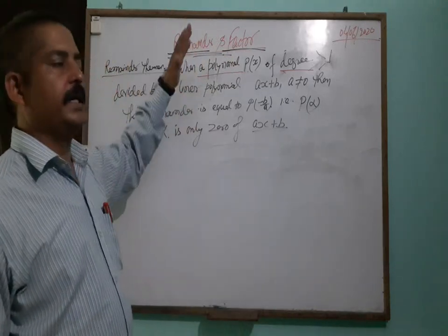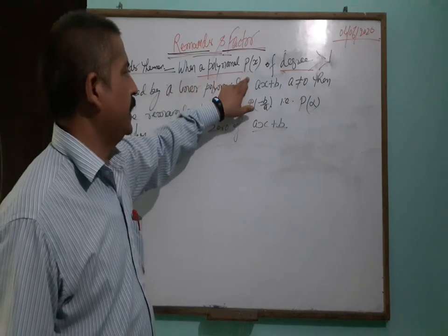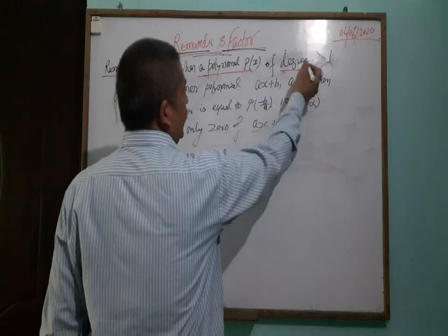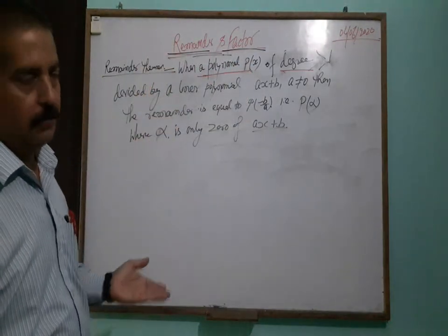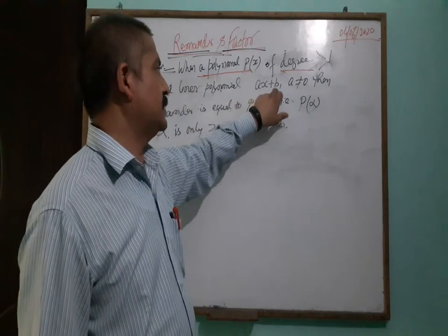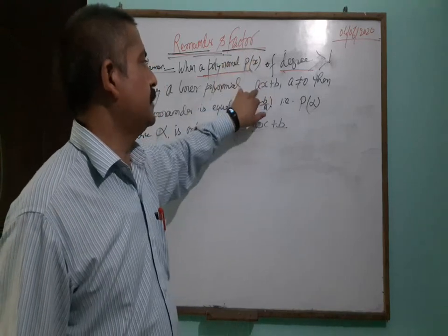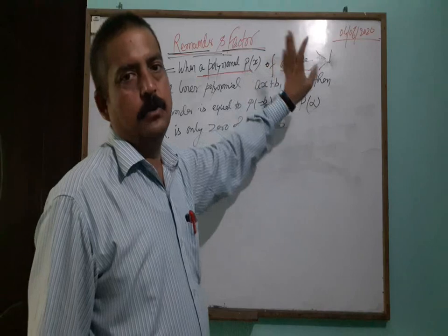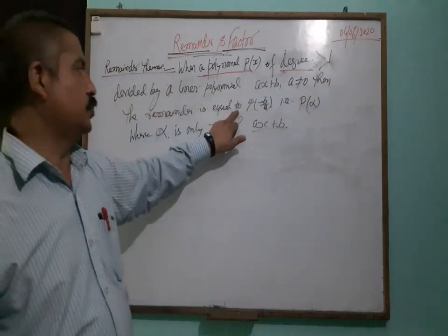When a polynomial p(x) of degree greater than or equal to 1 — so the minimum expression will be a linear equation, and more than linear: quadratic, cubic, biquadratic, etc. — is divided by a linear polynomial ax plus b, where a cannot be 0, then the remainder is equal to minus b by a.